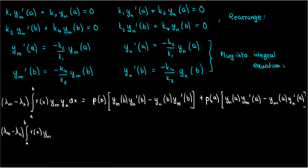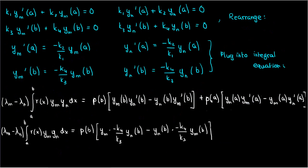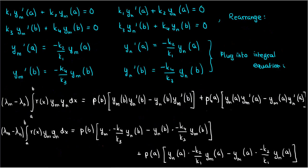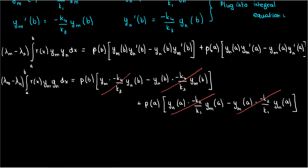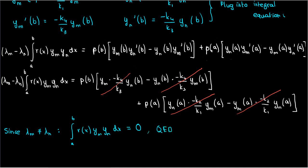Now let's substitute these back into our equation. The terms in the first set of brackets cancel out, and so do the terms in the second set of brackets, so the entire right-hand side becomes zero. Once again, since the eigenvalues aren't equal to each other, we can say that the integral from a to b of r(x) times y_m times y_n dx is zero, and so the proof of the Sturm-Liouville theorem is complete. We get an orthogonality relation between two eigenfunctions of a Sturm-Liouville problem with distinct eigenvalues. I'll see you in the next video.